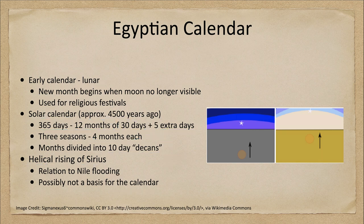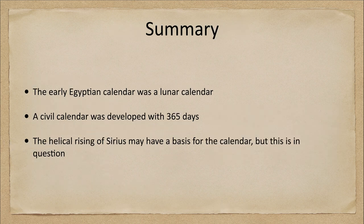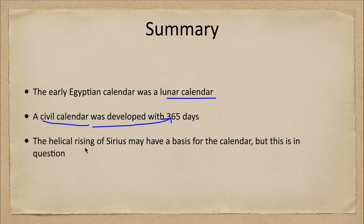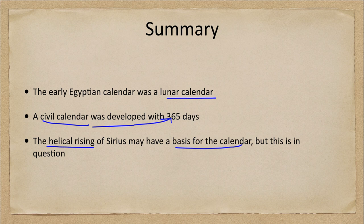To summarize: the early Egyptian calendar was a lunar calendar, then the civil calendar developed with 365 days. We also briefly mentioned the helical rising of Sirius, which could have been the basis for a calendar but is in question — though it did tie in to the Nile flooding at around the same time Sirius first appeared in the morning sky before sunrise.